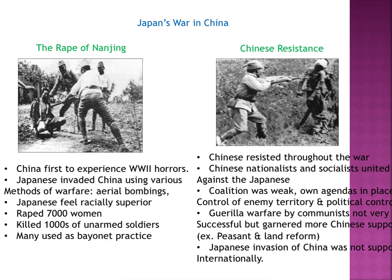The coalition was weak, and a lot of them began to have their own agendas, especially when they would take control of an enemy territory. The communists felt that even though they were supposed to be working together, they would take and control that territory for themselves. This created a lot of tension between the two and was one of the weak points of the Chinese coalition.